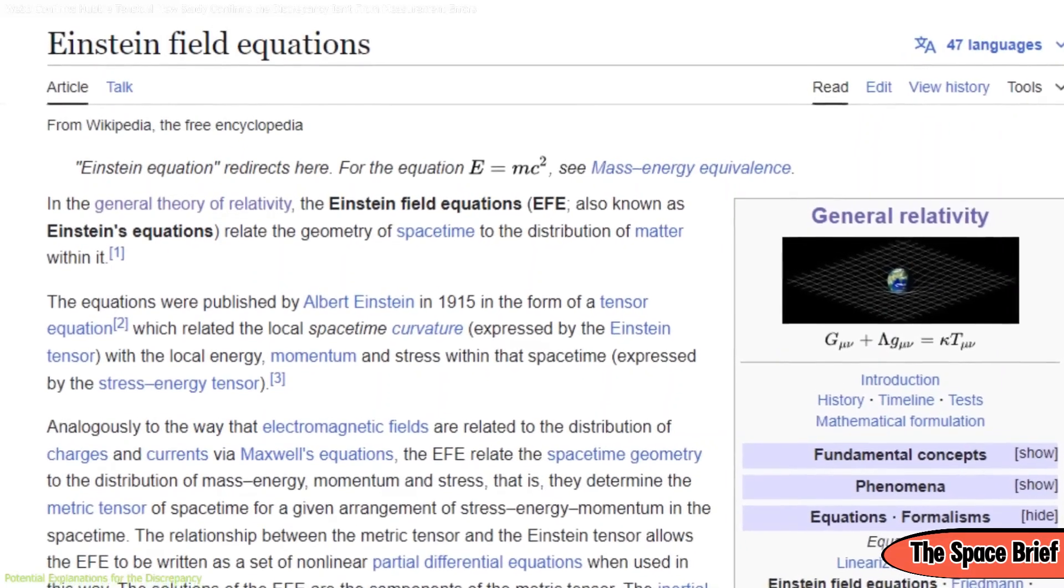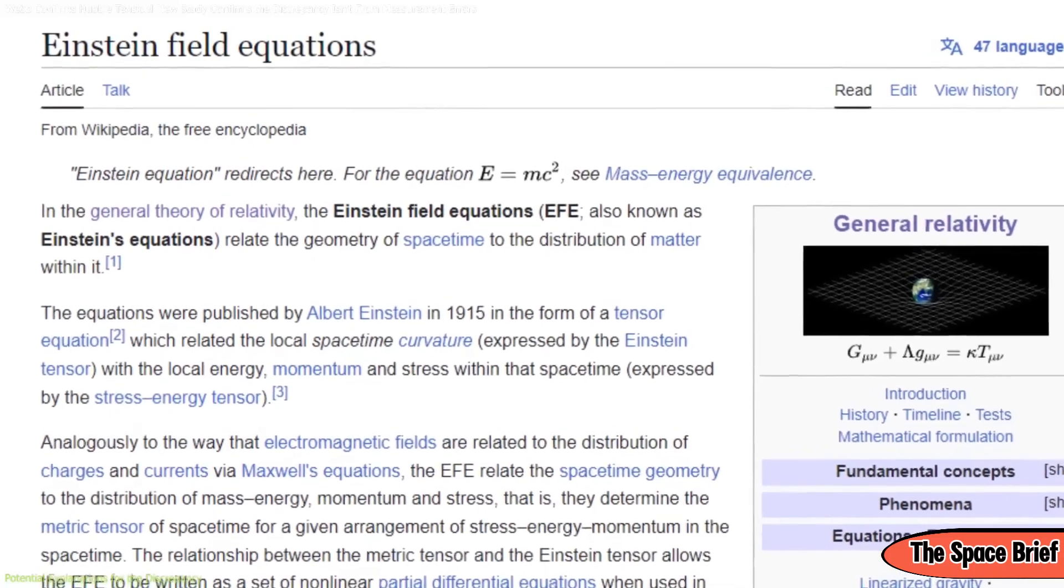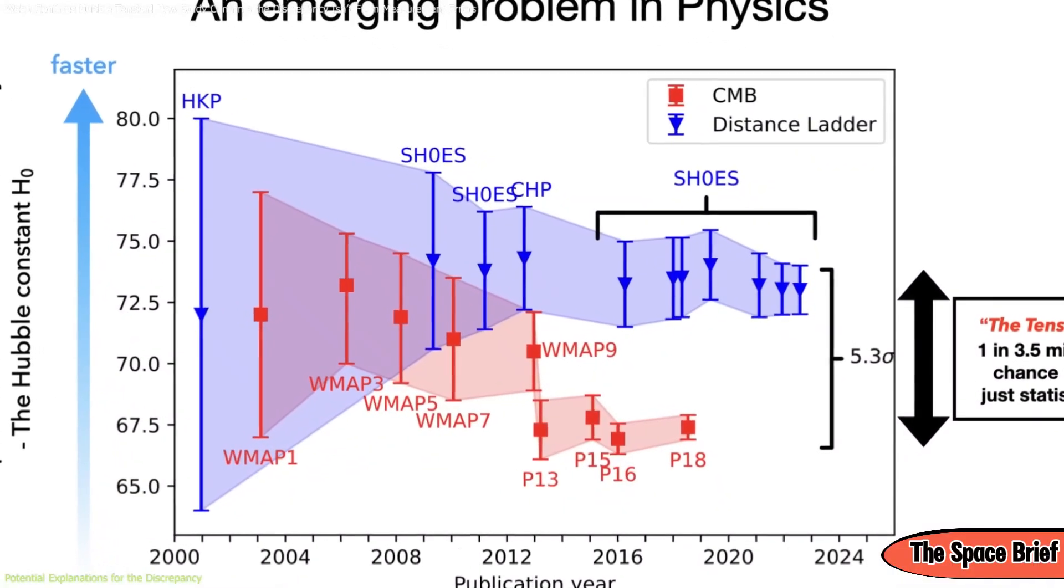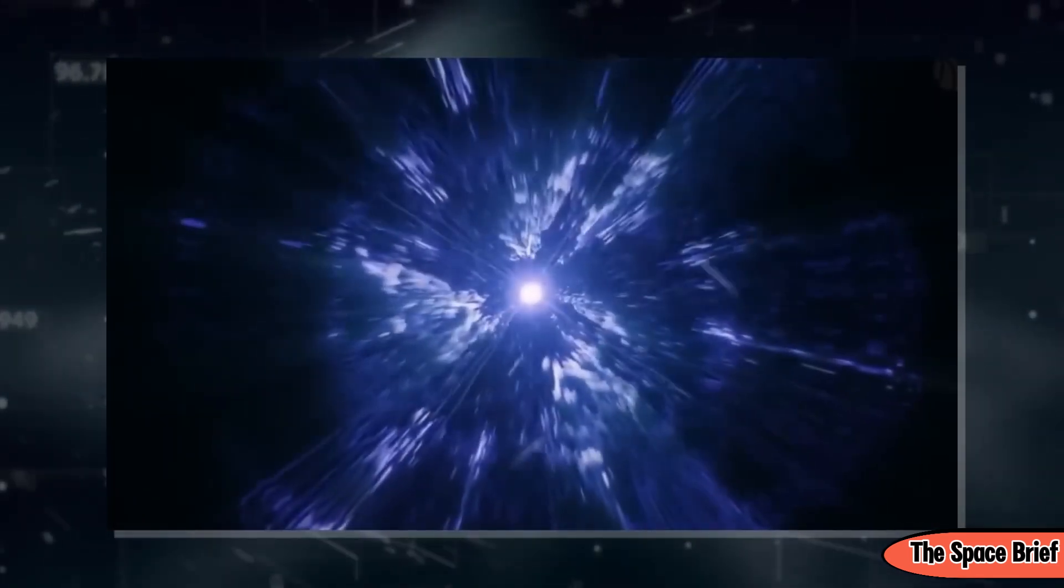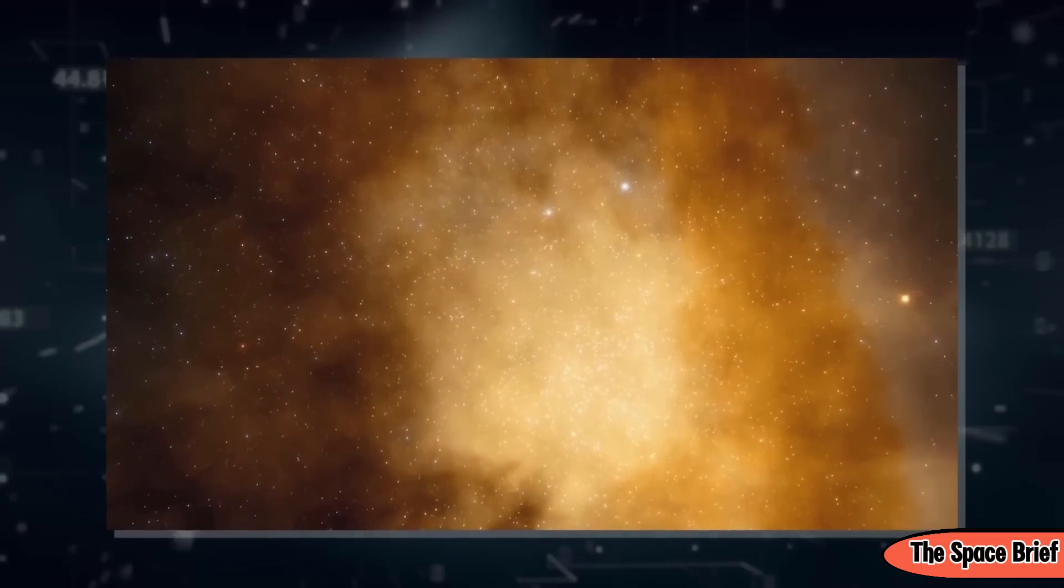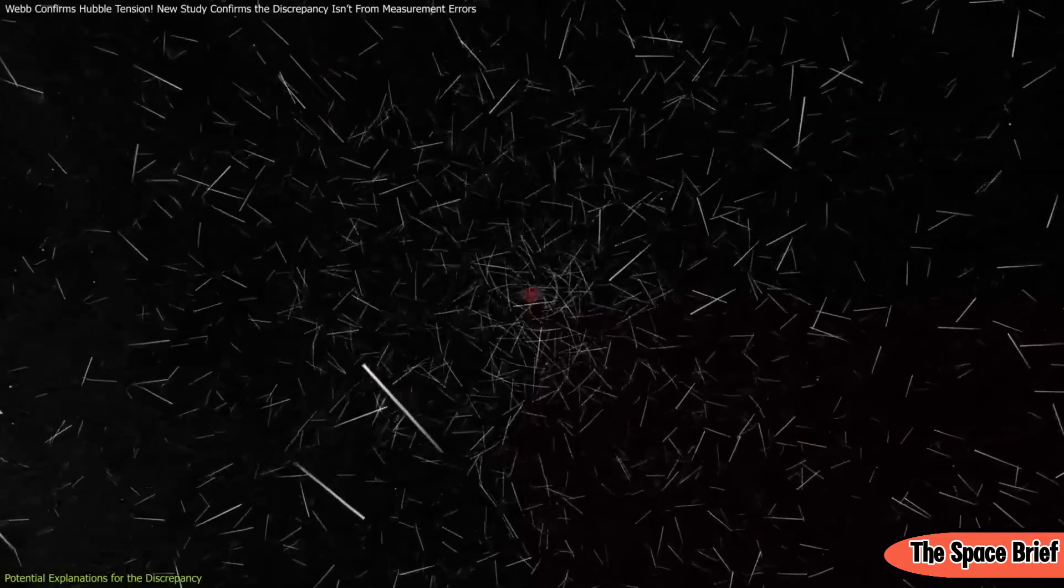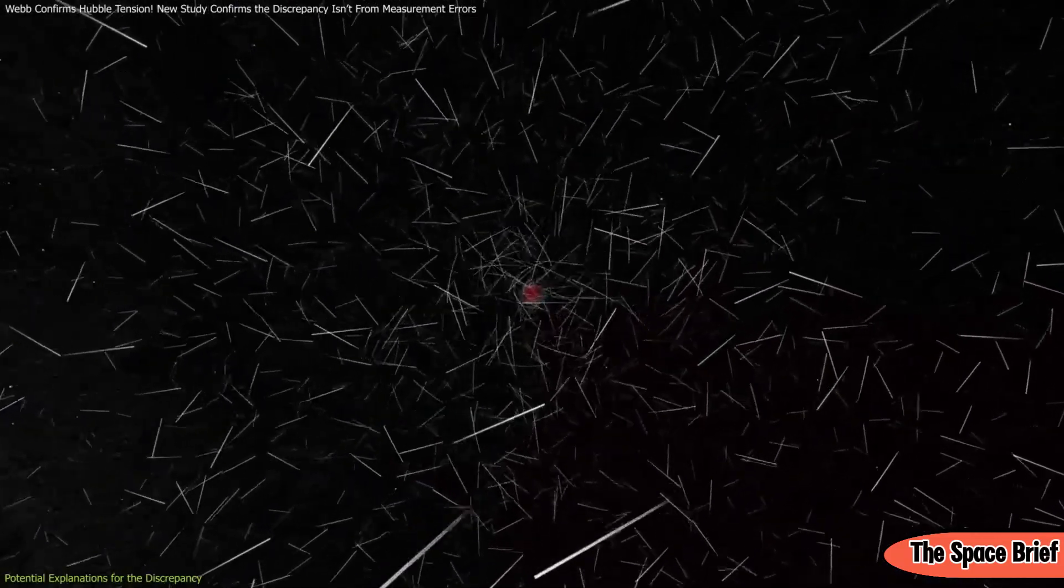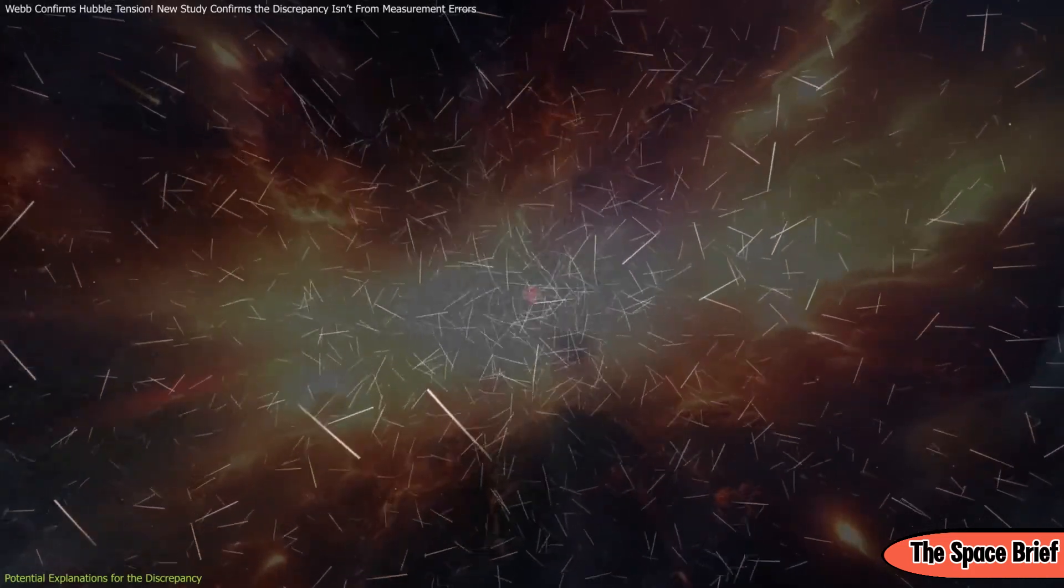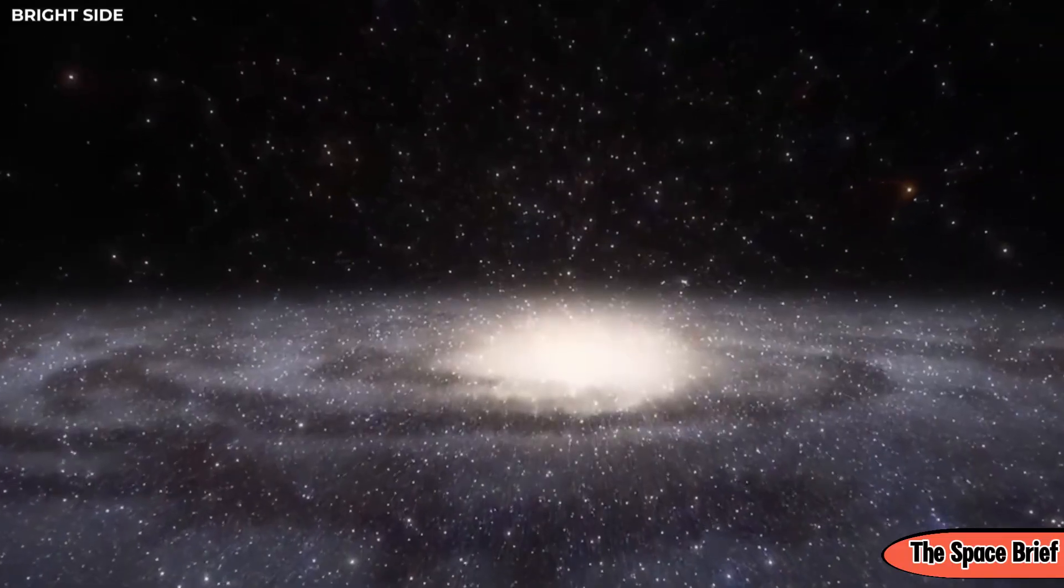Incorporating early dark energy requires fine-tuning its properties to match observations without disrupting other well-established cosmological phenomena. Modifying gravity necessitates a departure from general relativity, a theory that has withstood extensive experimental scrutiny. Introducing new particles like sterile neutrinos demands evidence for their existence, which has so far remained elusive.